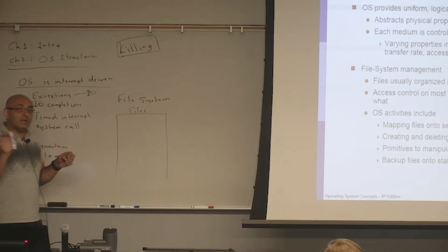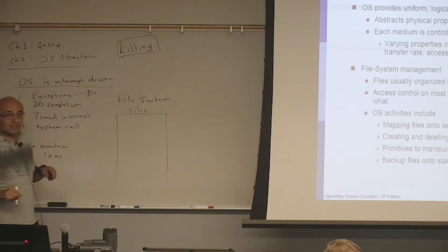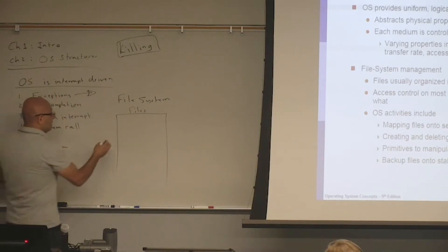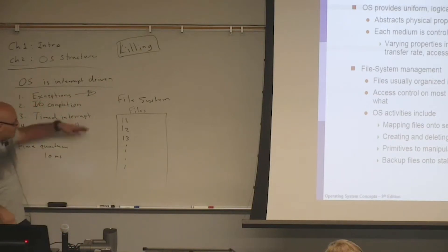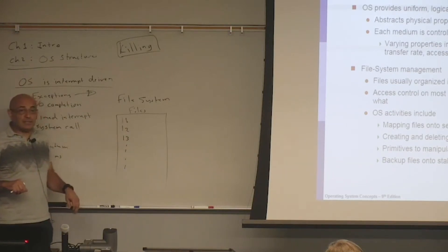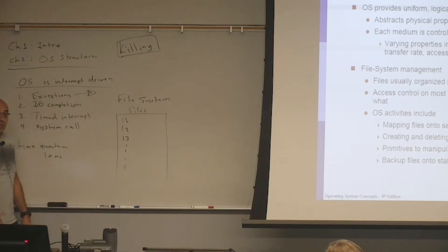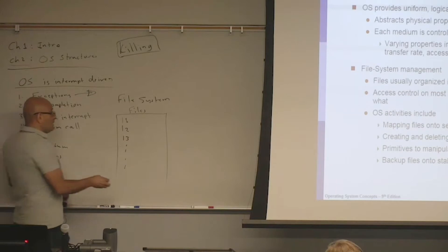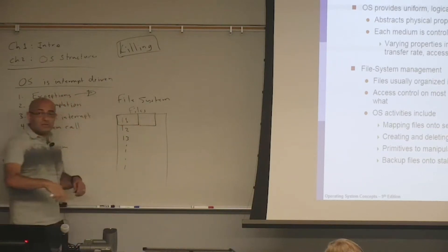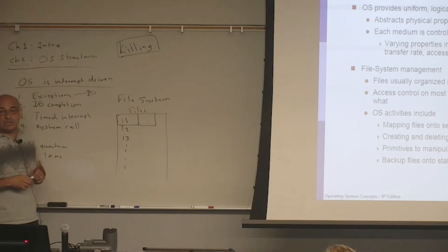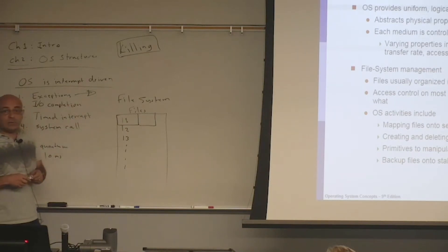We will learn the details when we get to disk management in the last two weeks of the semester. What's interesting about a file: if you have a text file with lines — line one, line two, line three — it looks like a nice, contiguous, human-readable text file. But on the device it may not be contiguous. It could be stored in different blocks, with one block somewhere in the middle and the next block physically stored in a totally different place on the same device. But to you, when you look at the file, it appears contiguous and human readable.